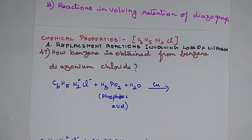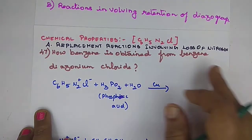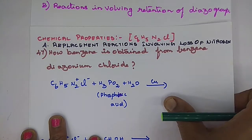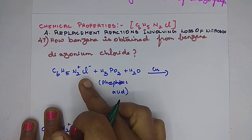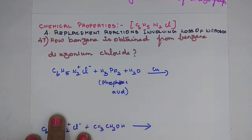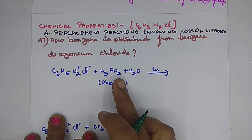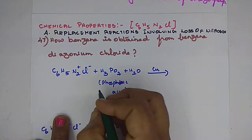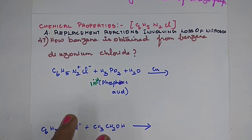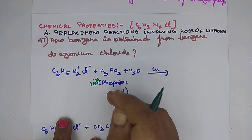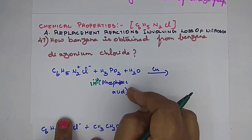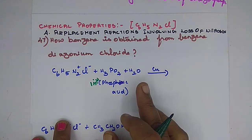I have a question here: how is benzene obtained from benzene diazonium chloride? Benzene diazonium chloride is treated with a mild reducing agent — hypophosphorous acid. This is H3PO2, which is phosphonic acid. That is phosphonic acid — an important one.